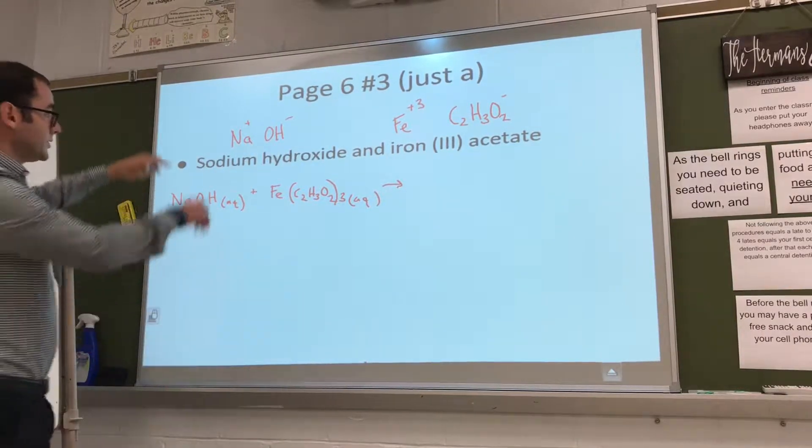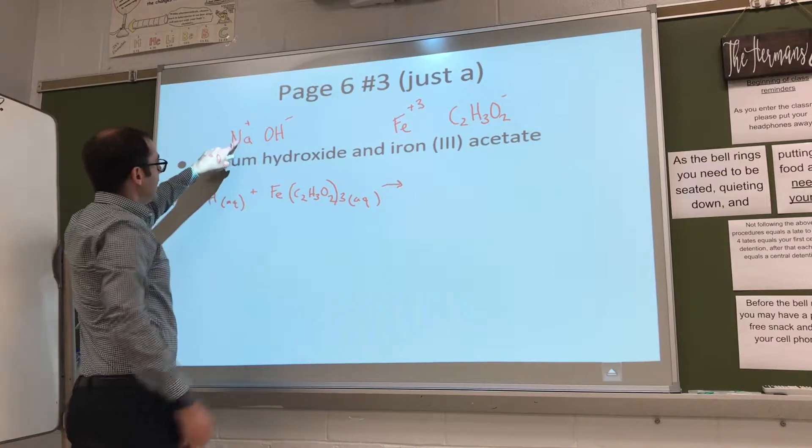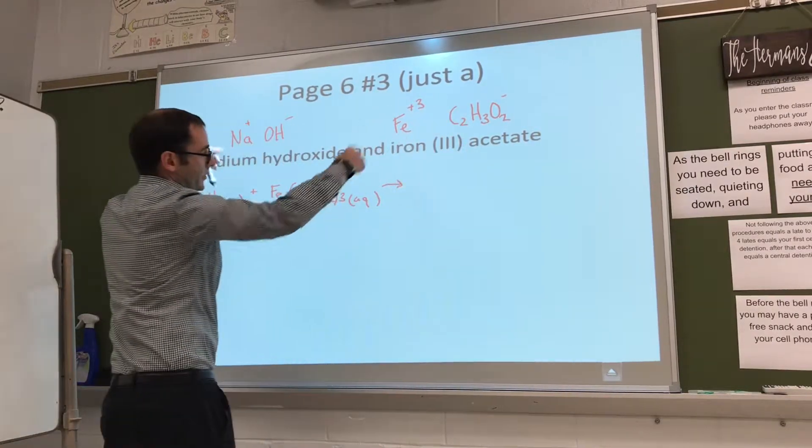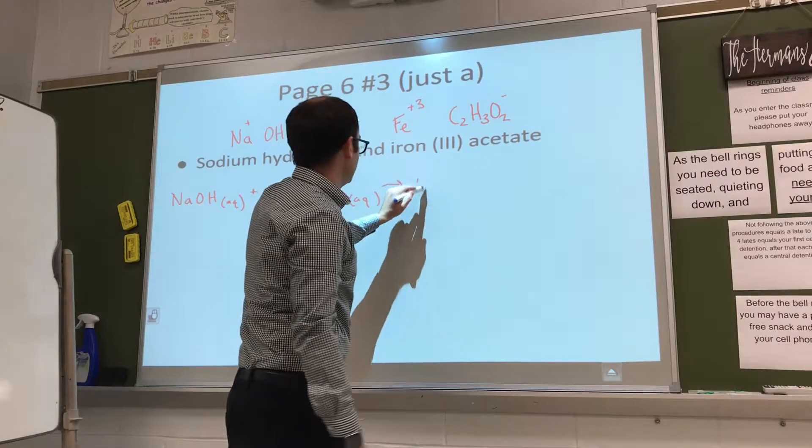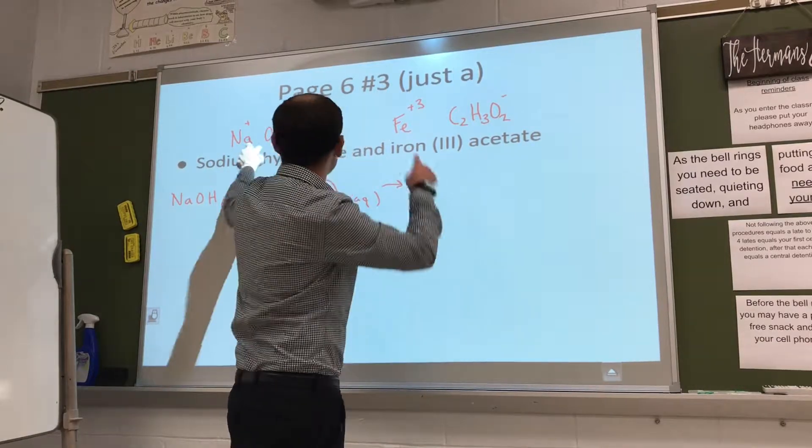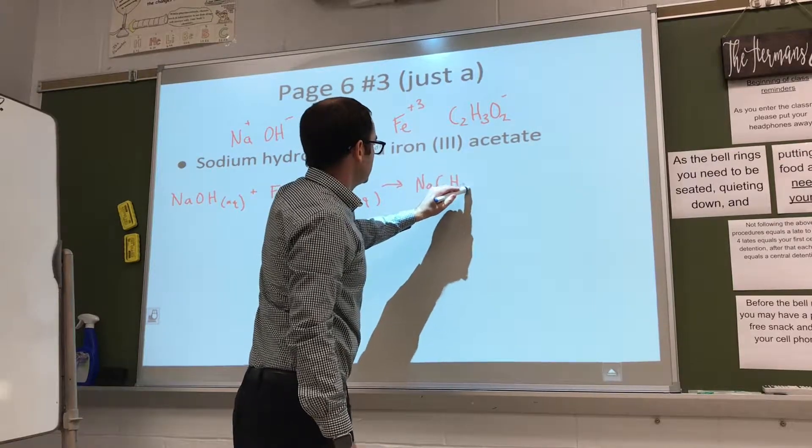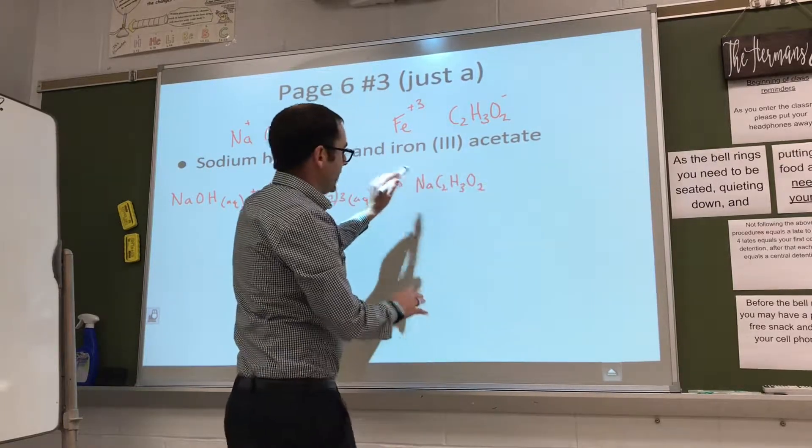All right, and because if you look up here, the Na is plus and this is minus, so they're going to go together on the other side. So we'll have Na, and because they're plus one and minus one, they just go together: NaC2H3O2. It's already balanced because it's one and one.